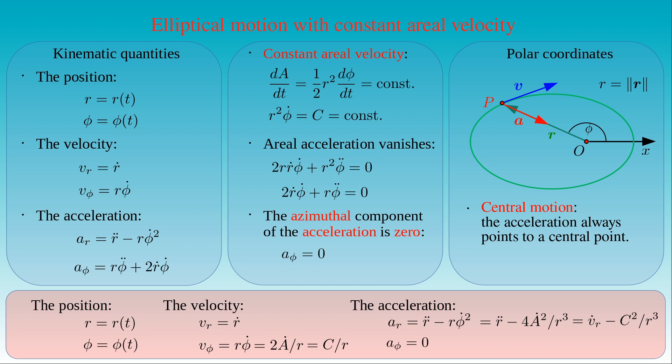The tangential acceleration of the body is the projection of the radial acceleration onto the tangential direction, which is given by the scalar product of the acceleration and the normalized velocity. The latter is the unit tangent to the elliptical orbit. This projection does not vanish, even if the aerial velocity of the body is constant.